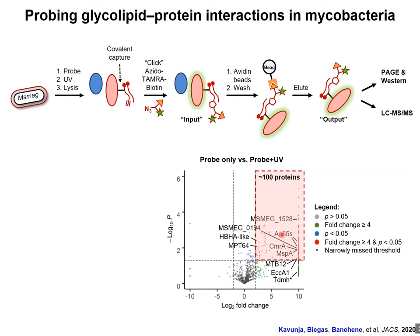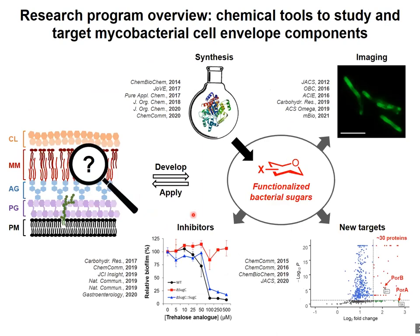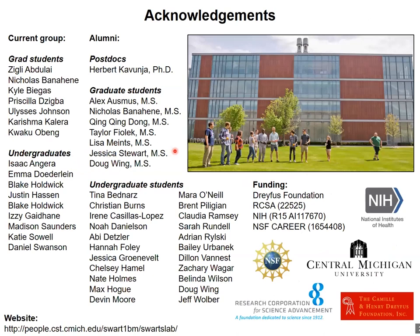These last two projects represent the first chemical tools for studying the mycomembrane proteome. To recap: synthetic bacterial carbohydrate analogs can be used to tease apart and target the cell envelope of this important group of pathogens, mycobacteria, and these approaches are more broadly applicable to bacterial glycoconjugates in general. I'd like to thank my group, the students who have done the work on these projects, our funding sources, and the organizers of the symposium. I'd be happy to take any questions.